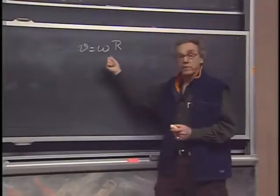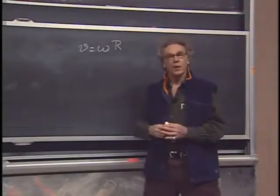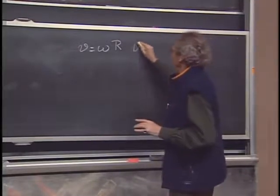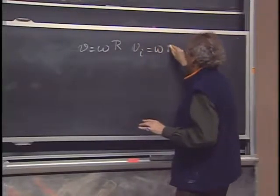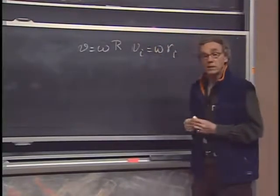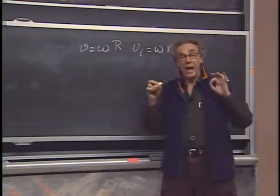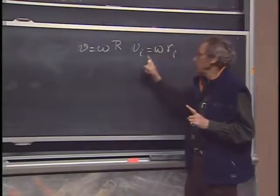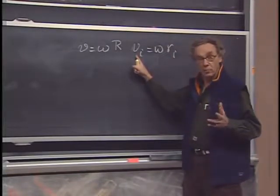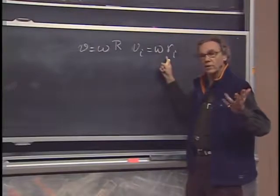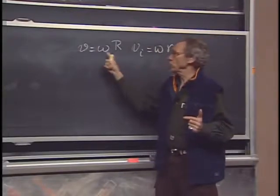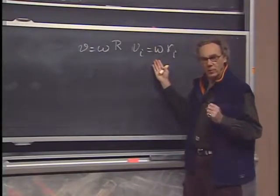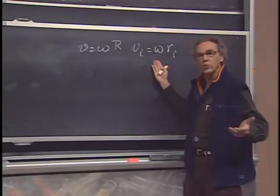So I wrote down v equals omega r, which of course holds in general. It would have been better, perhaps, if I had written down v_i equals omega times r_i, because each element little i, which has a position vector r_i, has a velocity which is given by v_i equals omega r_i. But I condense that sort of in one equation, v equals omega r. But this is the connection that will make it, perhaps, easier for you to understand what follows.